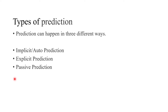Now in today's video we will try to understand the types of prediction. As discussed in the last video, the responsibility of predictor is to update the RAL database registers, and this mechanism is called prediction. There are three different types of prediction: first is implicit or auto prediction, second is explicit prediction, and third is passive prediction.